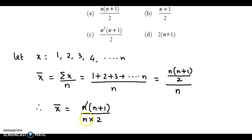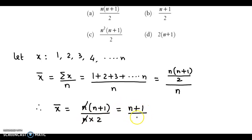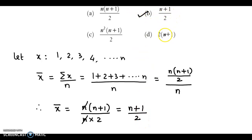We can cancel out the n, so we have the arithmetic mean as (n plus 1) upon 2. The correct answer to this question is option b: (n plus 1) by 2.